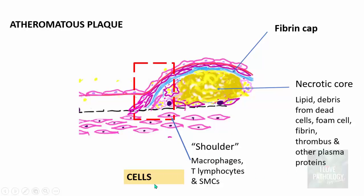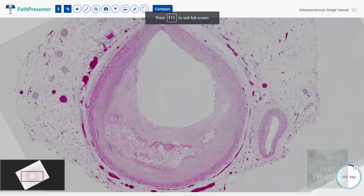To summarize the components: the cells, the fibrous cap as extracellular matrix component, the necrotic core as the lipid component, and the fourth component calcification seen in later-stage lesions.